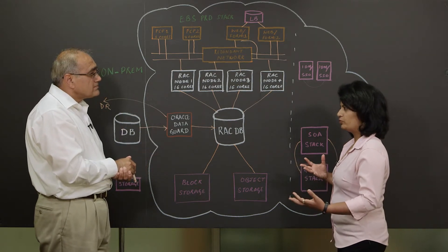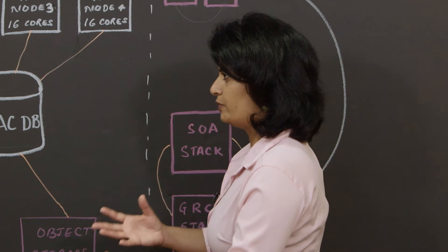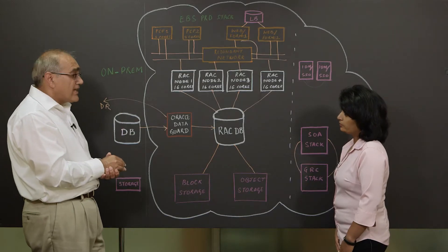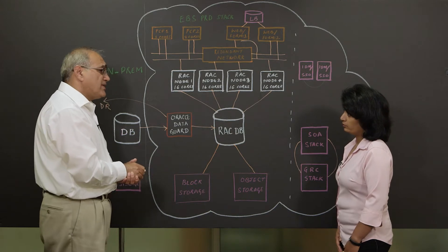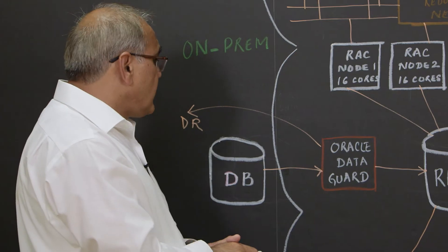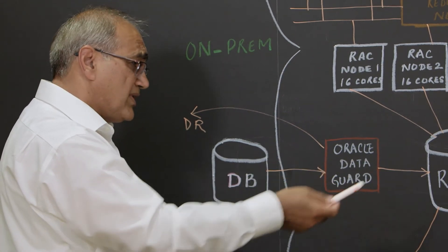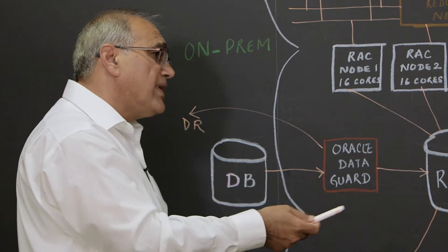And then you had a challenge of moving all that data, the massive amount of data that you had on-prem to the cloud, right? Right. We're talking about terabytes of data, somewhere between 10 to 12 terabytes of data. So if we were to migrate or transfer this data over the network from on-prem to the cloud, it takes days.